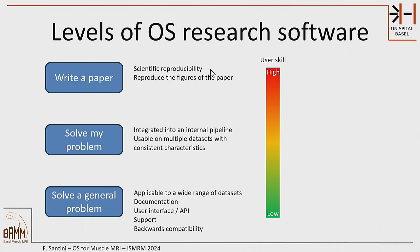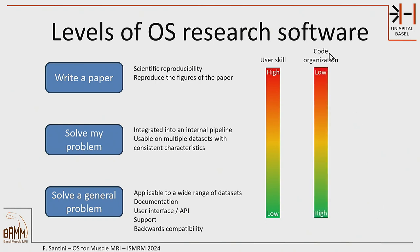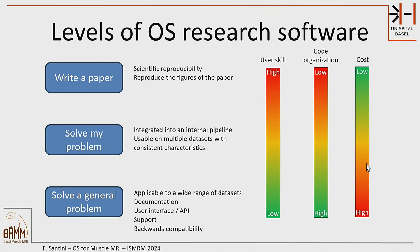Usually, if someone wants to use code to reproduce a paper or for their own purposes, the required user skill is high — we expect people to be programmers, able to tinker and change the code. Whereas if we want to solve a general problem, especially aimed at medical doctors or technologists who are not programmers, we need the barrier of user skill to be low. Code organisation can be relatively low for reproducibility code — just a list of instructions. But if you want to release to the community, especially open source, you have to start organising your code so people can understand and contribute to it.